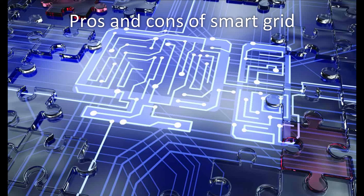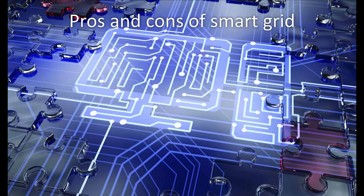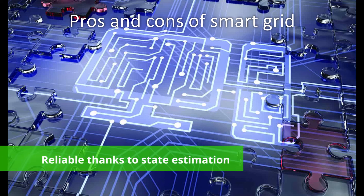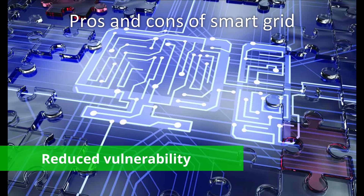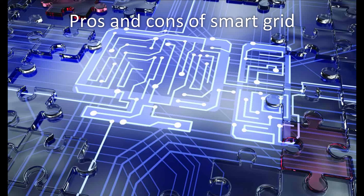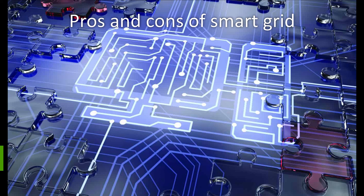The use of a smart grid carries several advantages. As mentioned in previous examples, it is very efficient. It is reliable thanks to the use of technologies such as state estimation that improves fault detection and allows self-healing of the network without the intervention of technicians. This will ensure a more reliable supply of electricity and reduce vulnerability to natural disasters or attack. Moreover, thanks to bidirectional energy flows, it allows distributed generation such as from solar panels on roofs of houses, and the excess energy can be sold into the network, allowing a potential earning from the household.